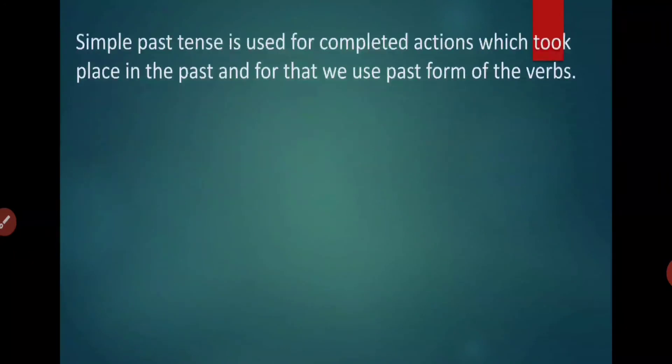Now let's see where we use simple past tense. Simple past tense is used for completed actions which took place in the past and for that we use past form of verbs. So we use simple past tense for actions which are already completed, which already took place in the past. Now they are no longer going on. So for that we use second form of verb or past form of verb.